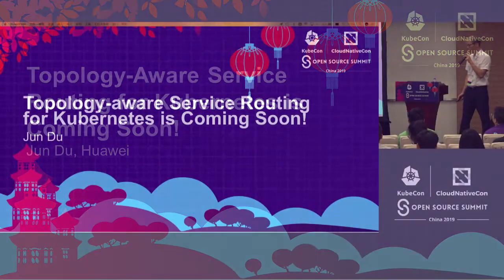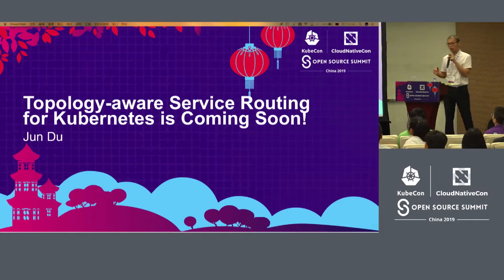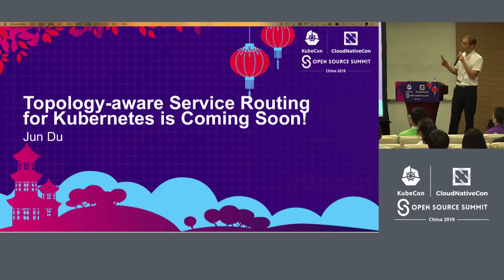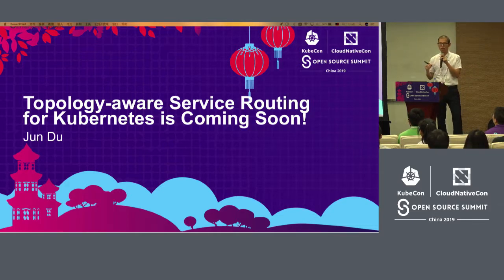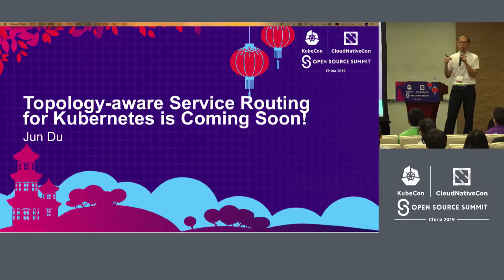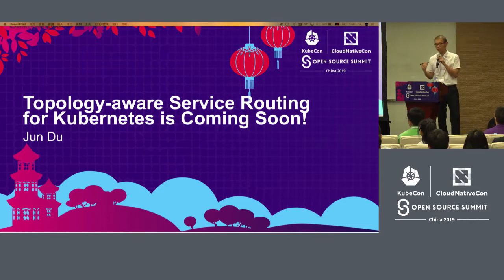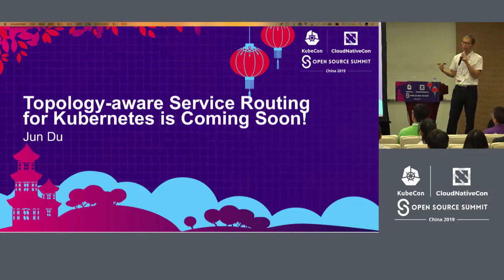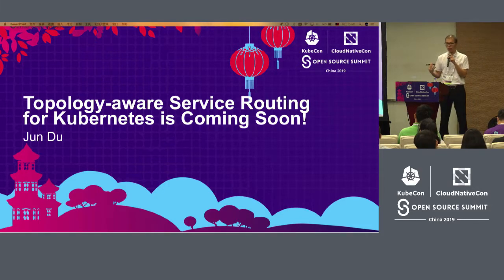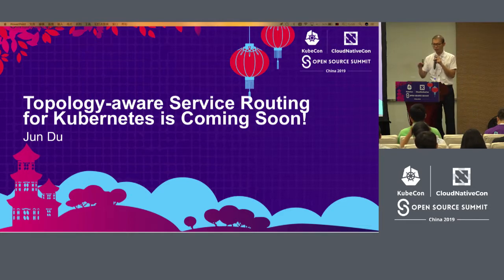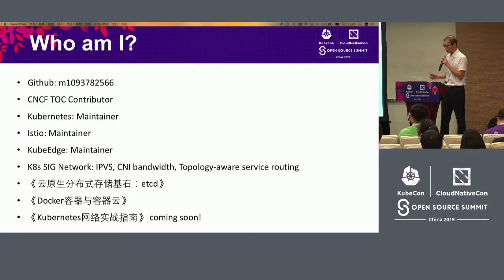Let's get started. Today my topic is regarding topology-aware service routing for Kubernetes. The name is quite abstract for this new feature. Those who are familiar with Istio may know that there is local routing, and this is more like boosting support of native Kubernetes, like zone local or region local, or any kind of locality you define.